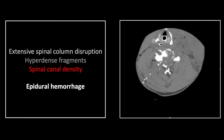You can see this is a gunshot wound. There is extensive spinal column disruption. There are numerous hyperdense fragments, a combination of both bone and bullet, and there is significant increased density within the spinal canal itself. It's easy enough to infer the presence of a significant cord injury as well as extensive canal hemorrhage at this particular level.